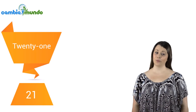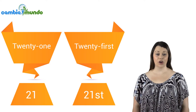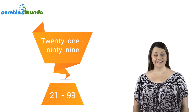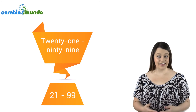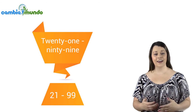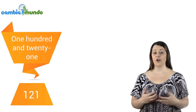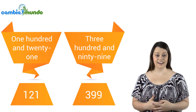We hyphenate cardinal and ordinal numbers when written in word form. For example: twenty-one or twenty-first. This rule only applies to numbers between twenty-one and ninety-nine. For larger numbers, for example one hundred and twenty-one or three hundred and ninety-nine, we still hyphenate these numbers.